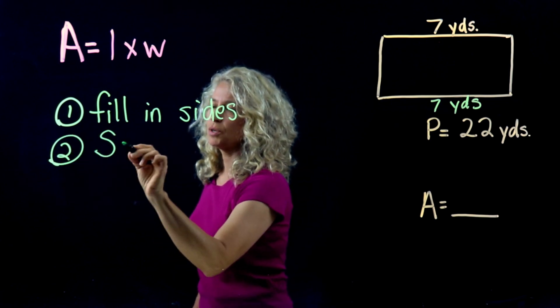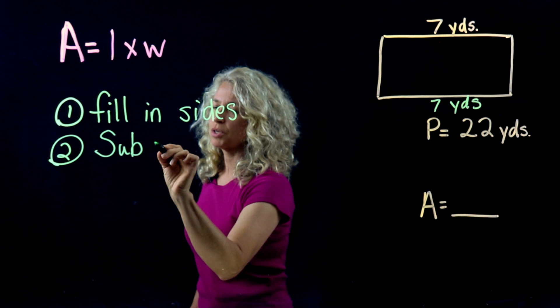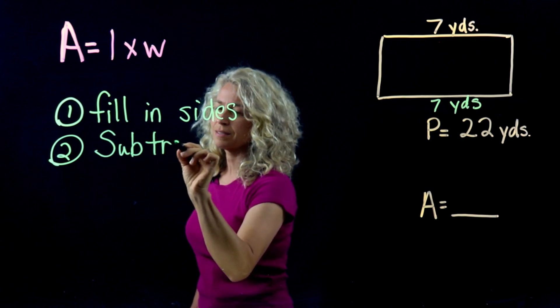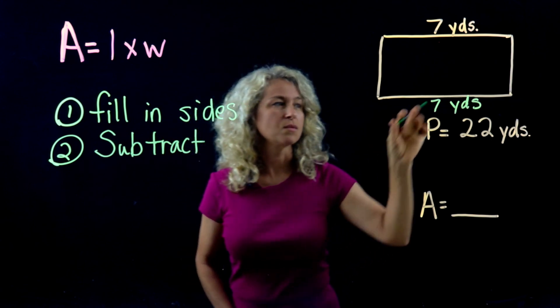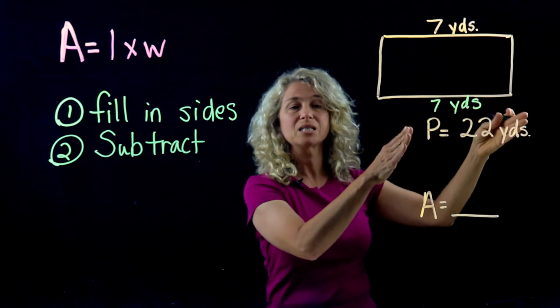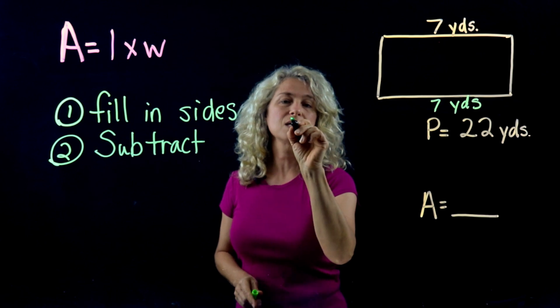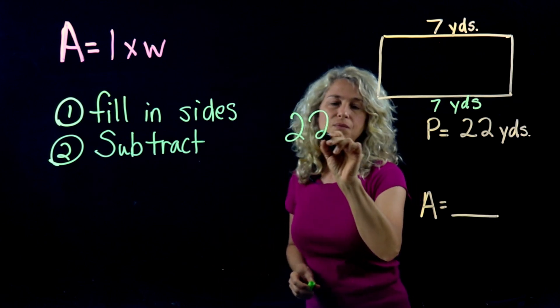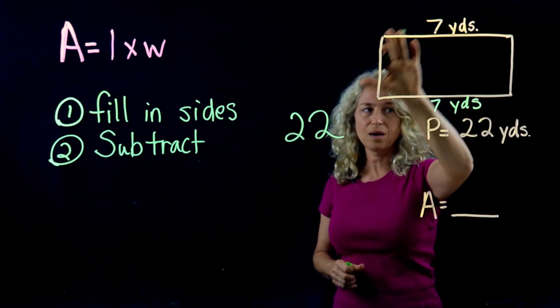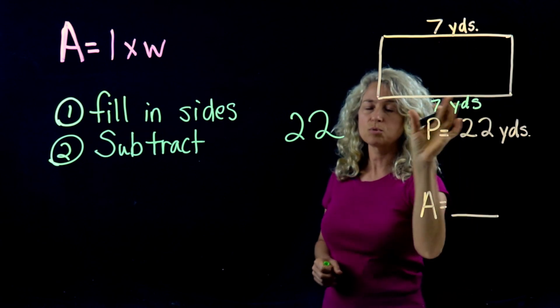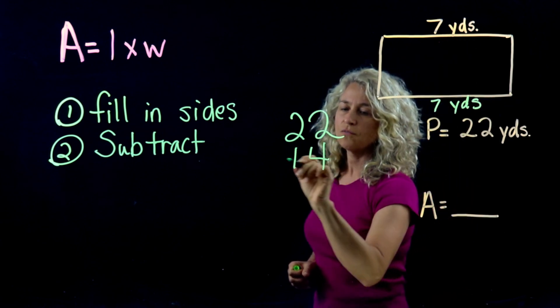Step 2 is we're going to subtract what is known from the total. So 7 and 7 is 14. So let's take 22, which is the total all the way around, and we're going to subtract 14 from that.